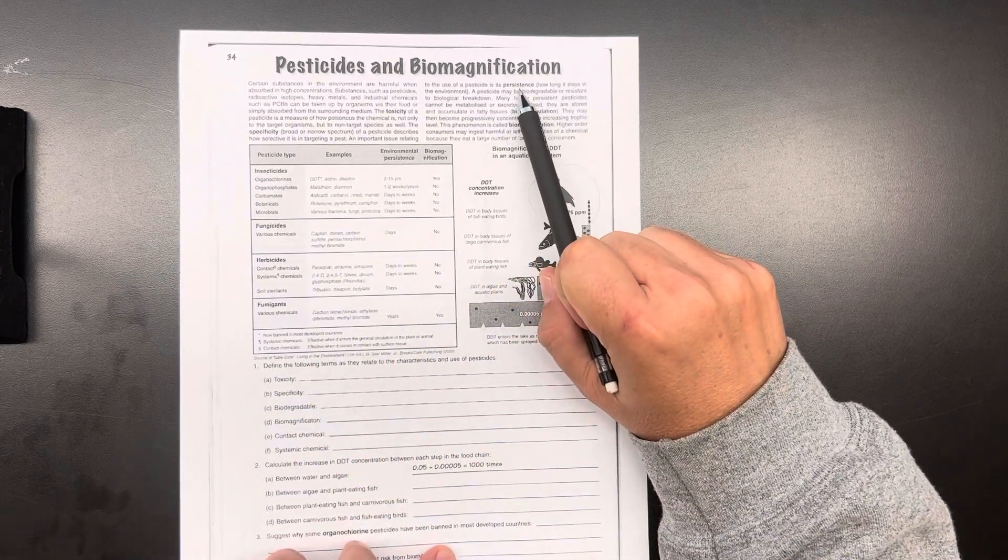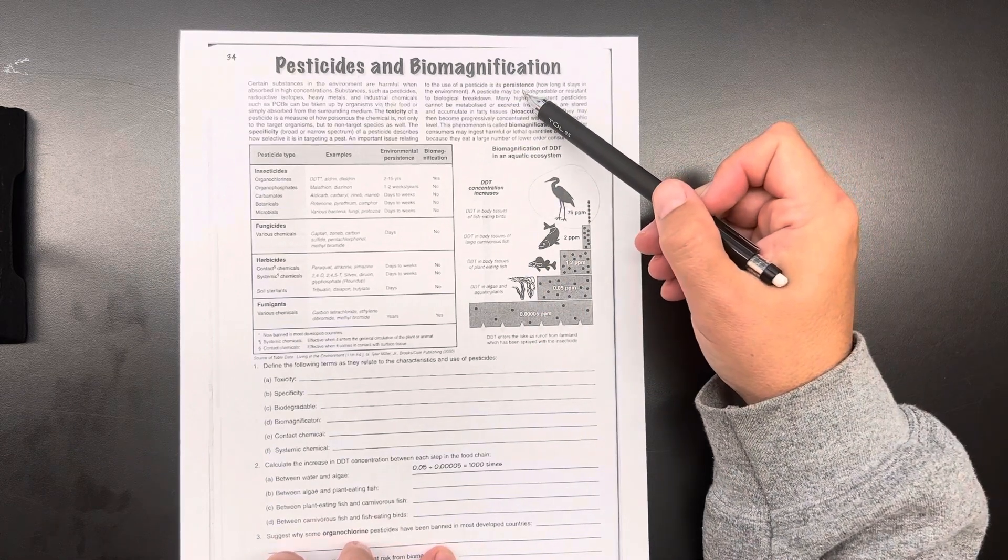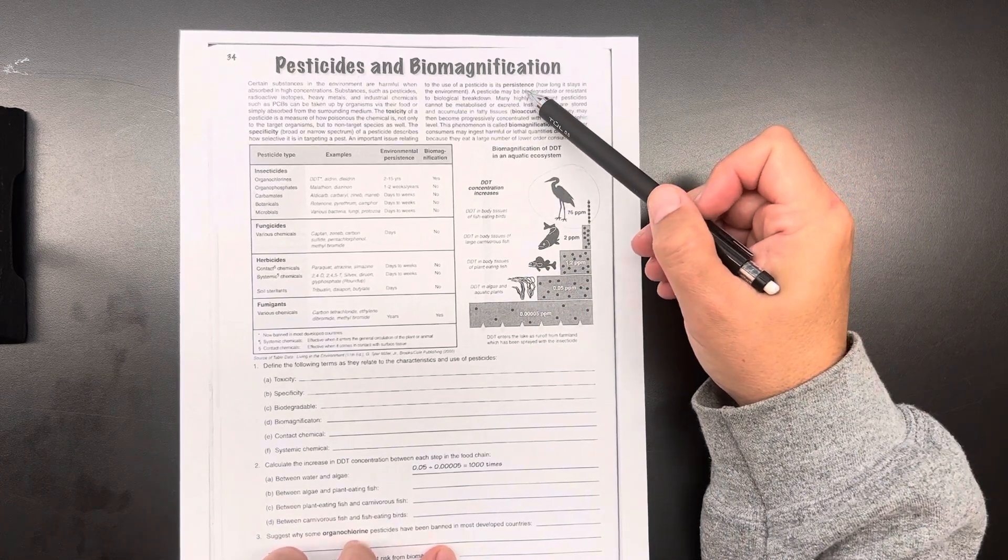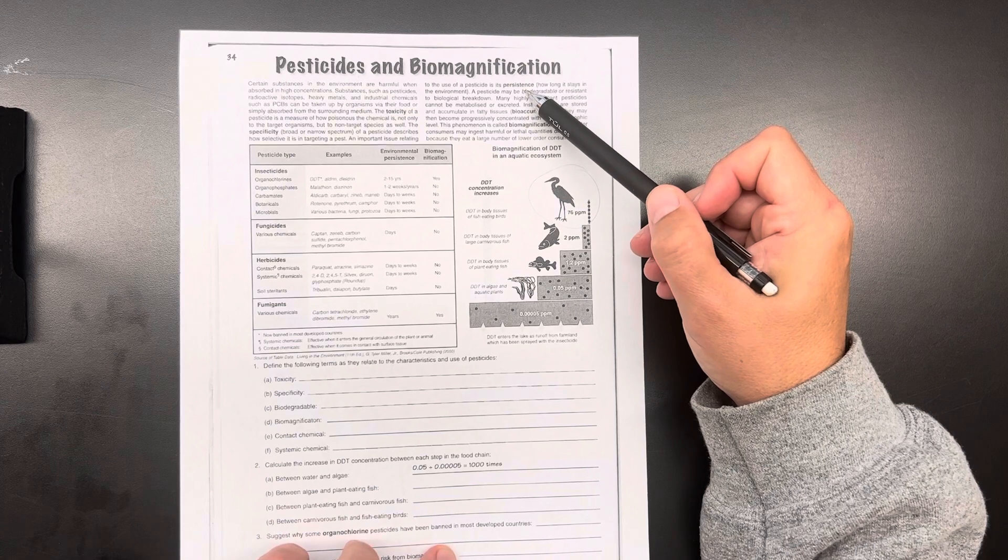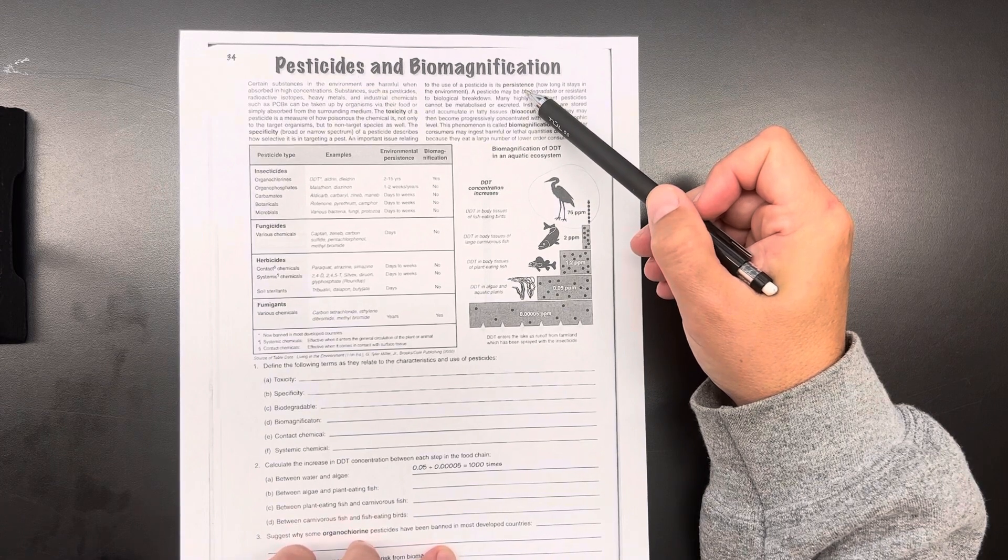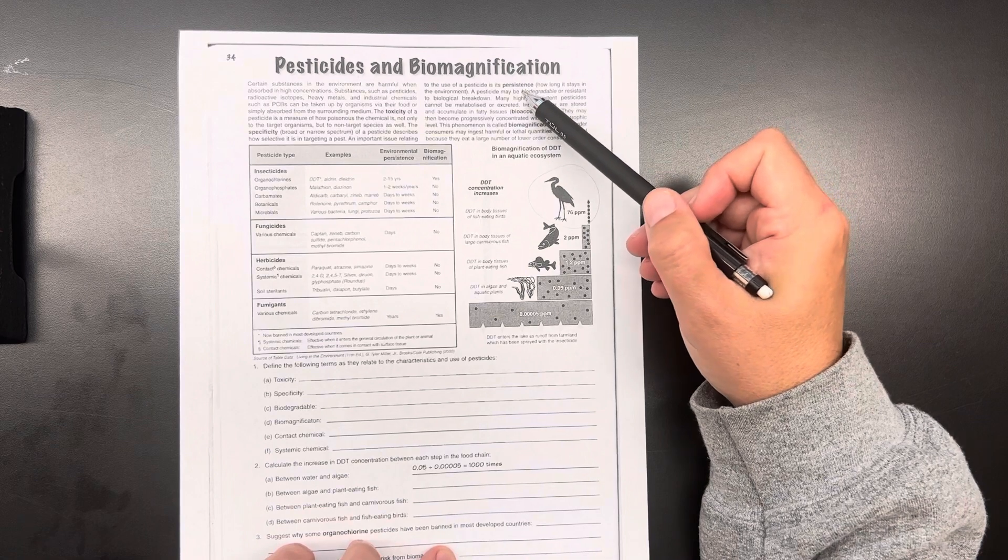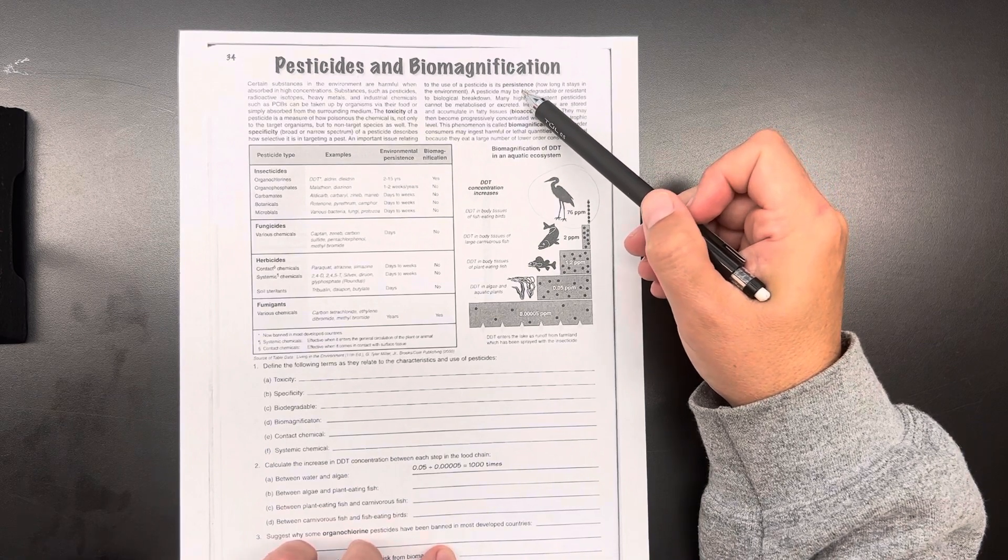Persistence has to do with how long it's going to stay in the environment. Some pesticides will not stay in the environment for more than a couple of days, and they become chemically inert. But then some will stay in the environment for years and years. Usually these are the ones that we don't use anymore.